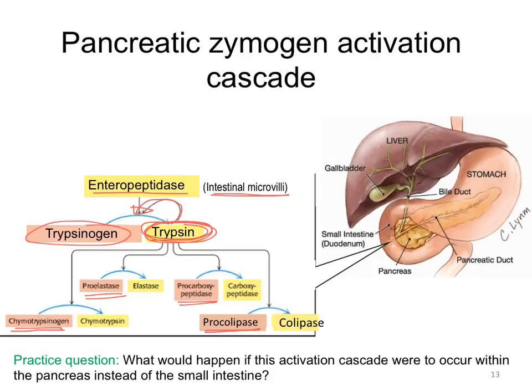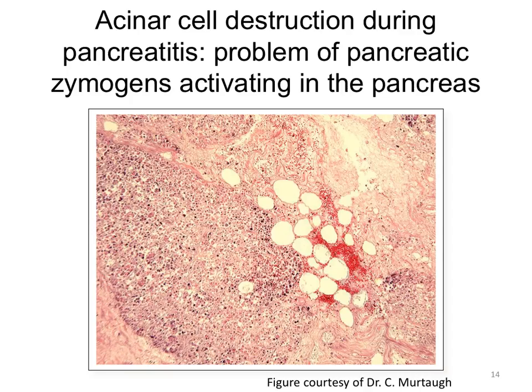Question: what would happen if this activation cascade were to occur within the pancreas instead of the lumen of the small intestine? Answer: digestion of the pancreatic acinar cells themselves. This causes the excruciating problem called pancreatitis.